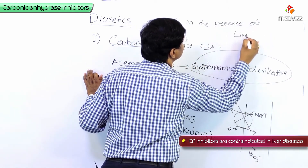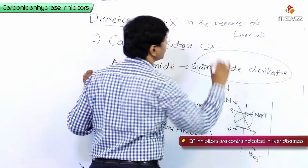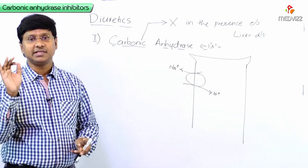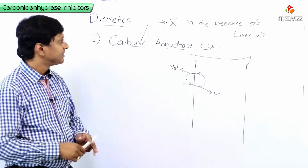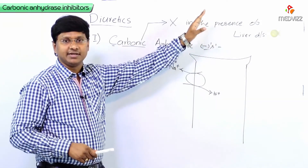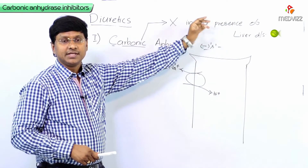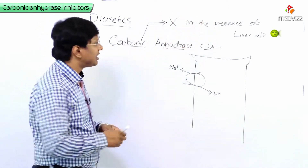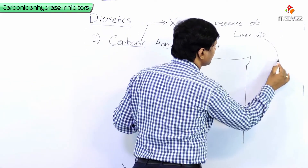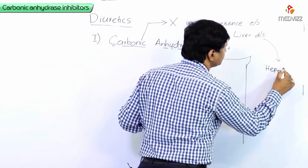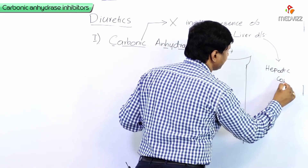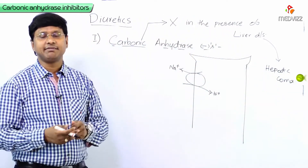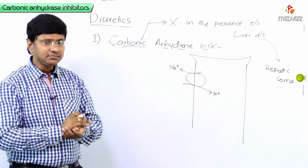Carbonic anhydrase inhibitors should not be used in the presence of liver disease. The reason is that in individuals with liver disease, they will develop what is called hepatic coma.